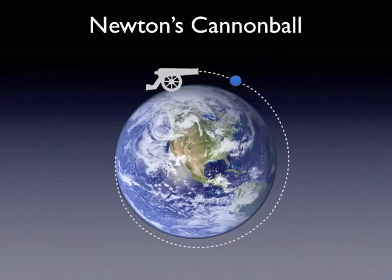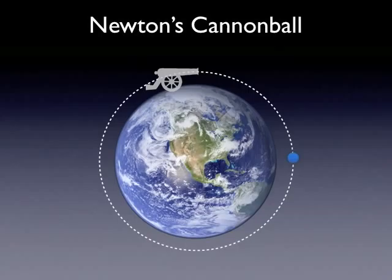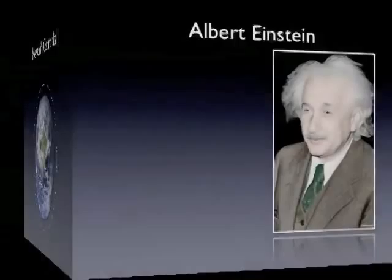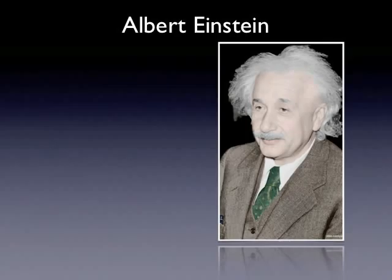He imagined a huge cannon that could fire cannonballs at various velocities. If you fired this cannon, the cannonball would travel much further than you might expect, because the Earth is curving away from the trajectory of the cannonball. If you could fire it with sufficient velocity, the Earth would curve away just as fast as the cannonball falls — it would never strike the Earth; it would essentially be in orbit. And that's exactly what happens with the moon. With this thought experiment, Newton unified the celestial with the terrestrial — apples and moons follow the same laws of physics; the moon simply has a velocity that allows it to avoid striking the Earth.